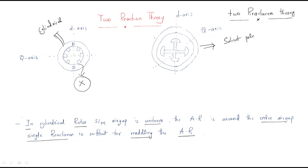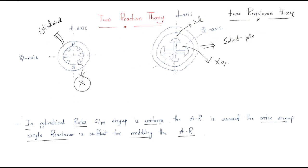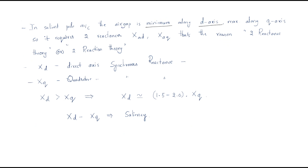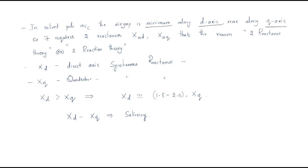For the salient pole rotor, we have two things: the direct axis and the quadrature axis. The direct axis has one reactance Xd, and the quadrature axis has another reactance Xq. In a salient pole machine, the air gap is minimum along the direct axis and maximum along the quadrature axis. Therefore it requires two reactances: Xad and Xaq.